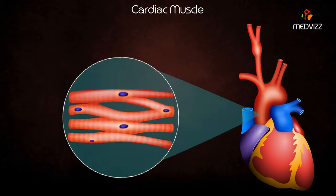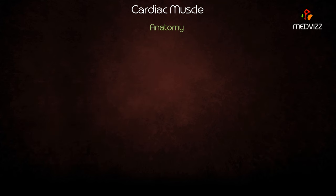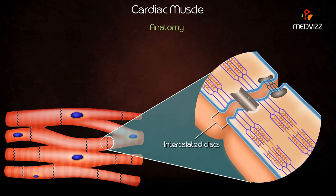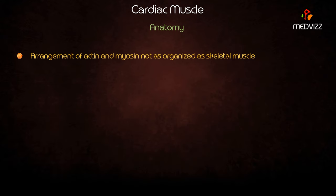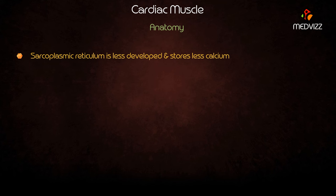Cardiac muscle is located only in the heart. It is made up of striated uninuclear cells joined end-to-end forming a network. Cell junctions are called intercalated discs, and the cardiac muscle has gap junctions. The arrangement of actin and myosin is not as organized as in skeletal muscle. It contains sarcoplasmic reticula, transverse tubules, and numerous mitochondria. The sarcoplasmic reticulum is less developed than in skeletal muscle and stores much less calcium.